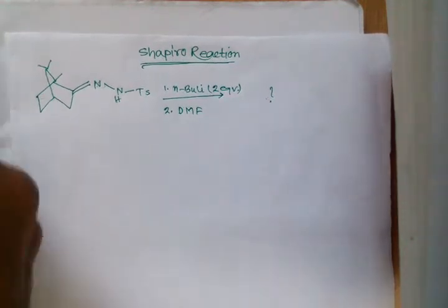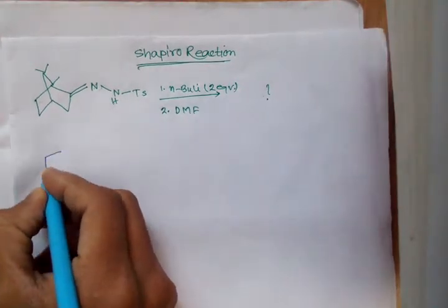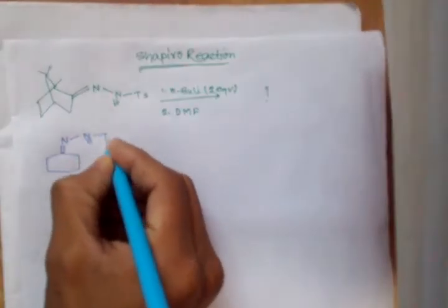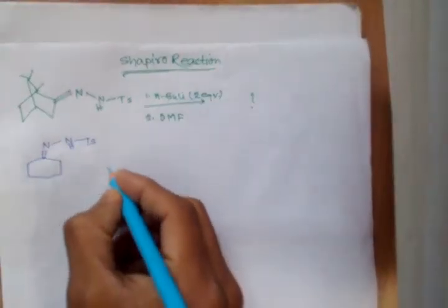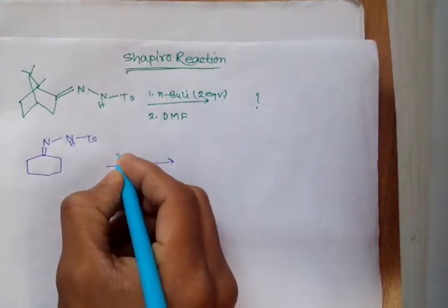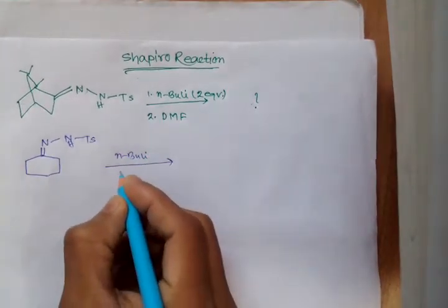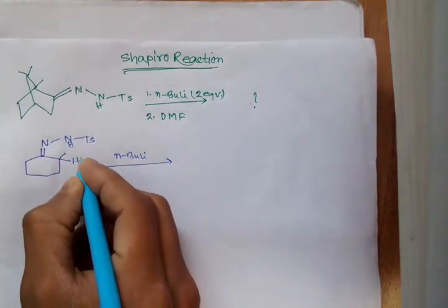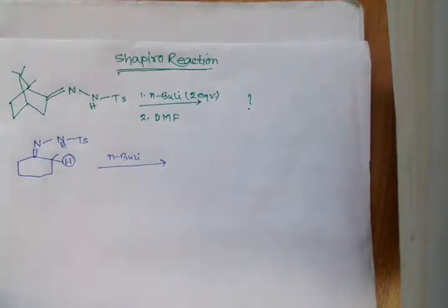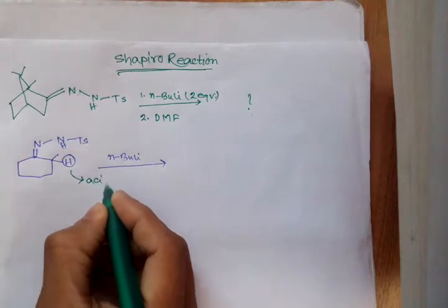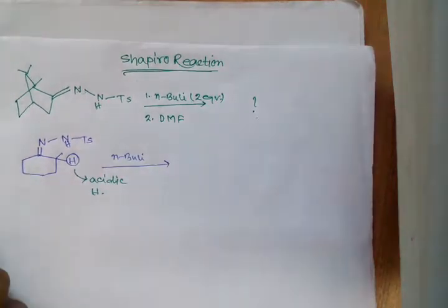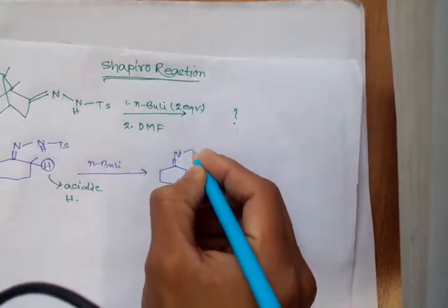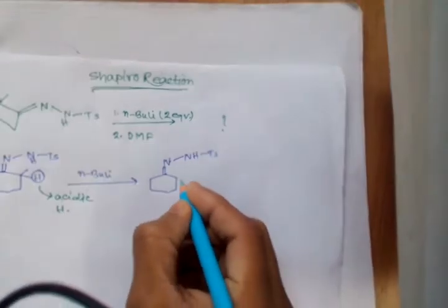First, consider a tosyl hydrazone like this one. I add one equivalent of N-butyl lithium. The base, butyl lithium, abstracts this proton since it is acidic — an acidic hydrogen. So what we get is this anion.